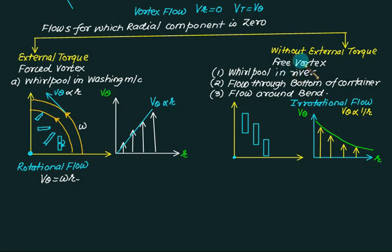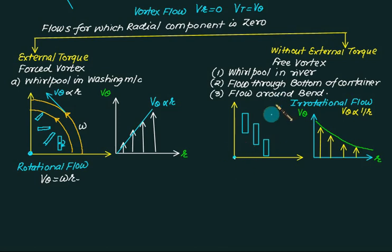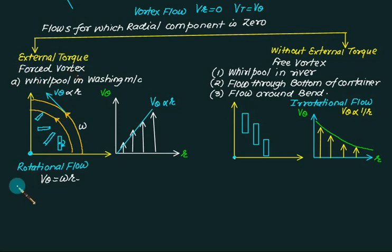In a whirlpool (free vortex), the energy required to rotate the fluid particle about the fixed point is taken from the system itself, so the system energy continuously decreases. In forced vortex, external torque is applied, adding energy to the system. Therefore, whatever energy is lost is replenished by the external source, and the total energy remains constant.